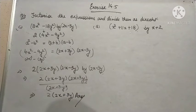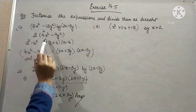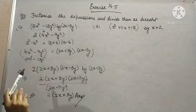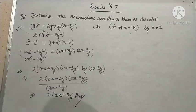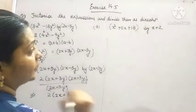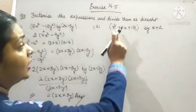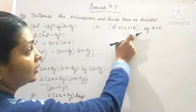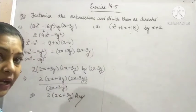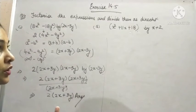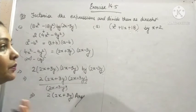So, what we have to do? First of all, we need to check the identity which can be applied in the given expression, factorize it and then divide it. Now, see over here, you can't factorize it using any identity. That means you need to use splitting the middle term.